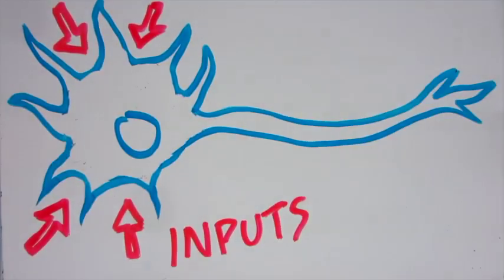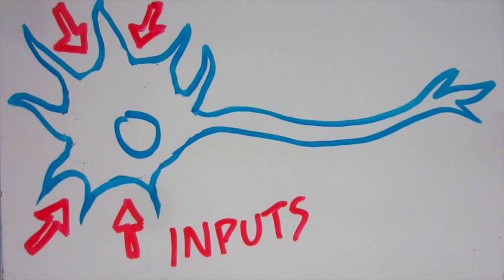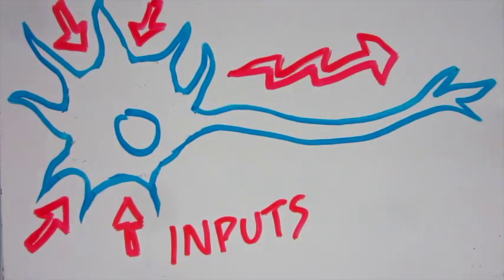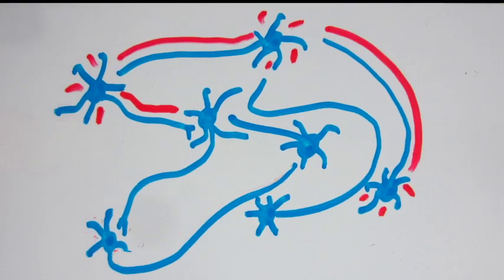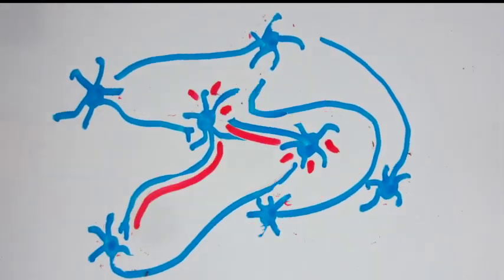The dendrites can be thought of as the inputs, collecting electrical signals and bringing them to the cell body. If the neuron gets enough input, it fires a pulse of energy down its axon. This signal can then be picked up by the dendrites of other neurons.